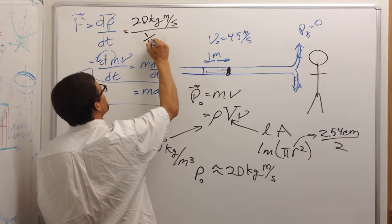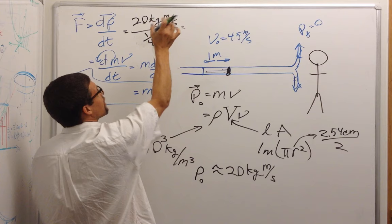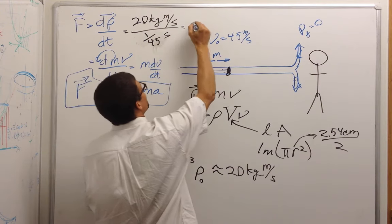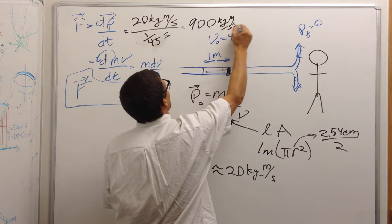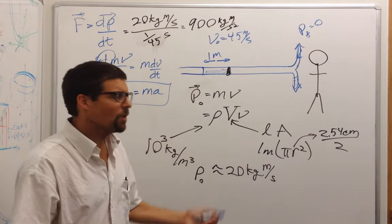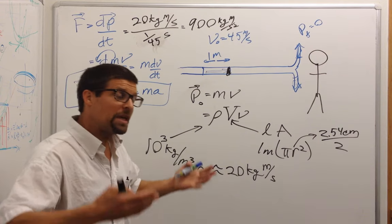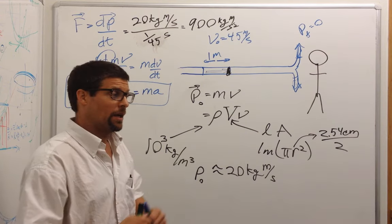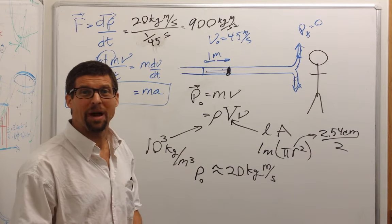So that's 1 over 45th of a second. The 45 from the denominator comes up to the numerator, and we have about 900 kilogram meters per second squared, or 900 newtons. About 1,000 newtons. That would be the force of gravity on 100 kilograms, or about 220 pounds.